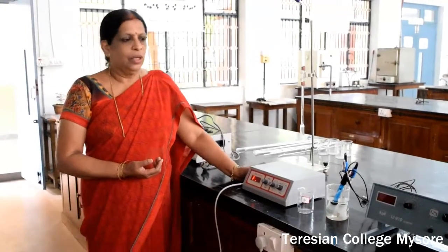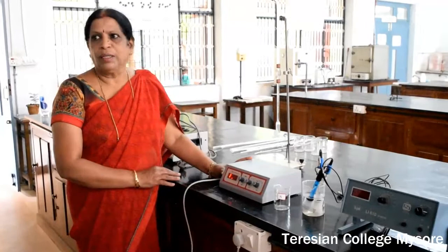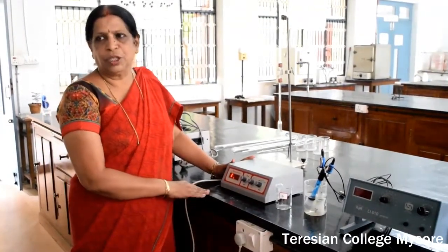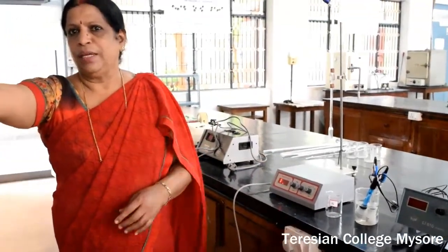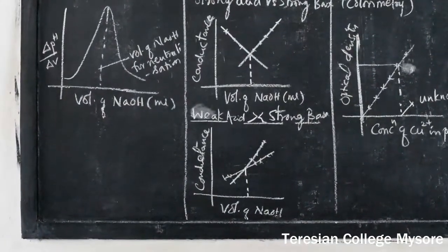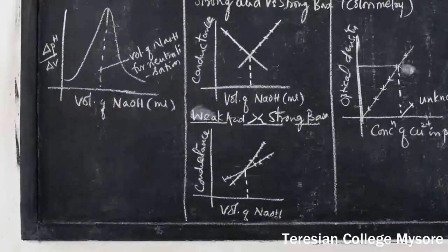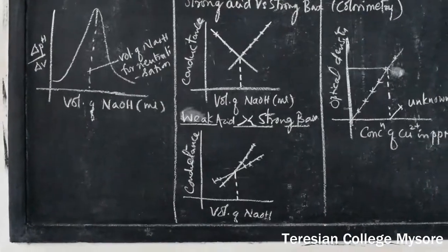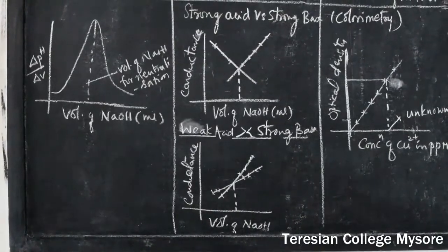From the graph only you are going to find out the volume of sodium hydroxide required for neutralization. In the tabular column in the practical records, go to the calibration part and plot the graph of ΔpH/ΔV versus volume of sodium hydroxide in milliliters. The maximum of the graph corresponds to the volume of sodium hydroxide required for neutralization.